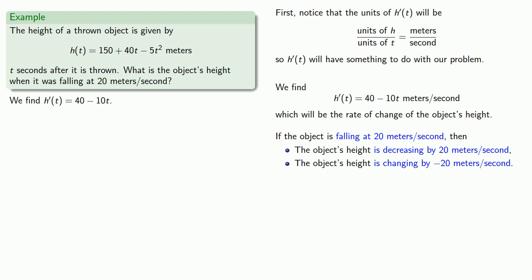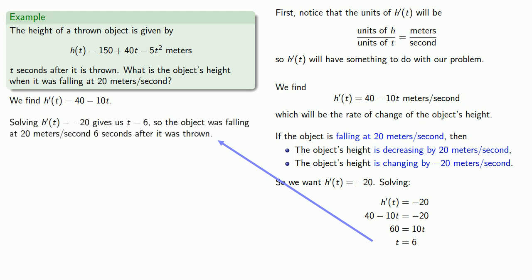Well, this is useful because we have the rate of change of the object's height. And so we want this rate of change of the object's height, h prime of t, to be minus 20. And so we'll set down that equation and solve. And we find t equals 6. So we can summarize our results. The object was falling at 20 meters per second 6 seconds after it was thrown.